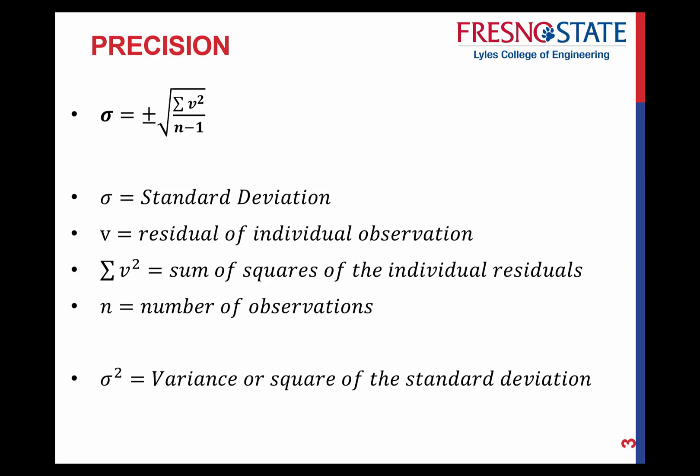The way to quantify precision is called the standard deviation. V is your residual — the most probable value minus any observation. You take the sum of the squares of every individual residual, divide by the number of observations, and that gives you the standard deviation as a plus or minus value. If you take the square of the standard deviation, that's what's considered the variance.